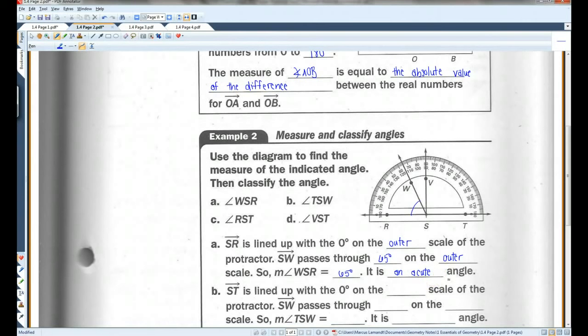Ray ST, we're looking at this one now. Angle TSW would be this angle here. ST is lined up with zero on the inner scale of the protractor. SW passes through, looks like about 115 on the inner scale. We call it the inner scale and outer scale because this scale is on the outside and this scale is on the inside. On the outer scale, it passes through 65, but because I'm using the inner scale for ST, I have to use the inner scale for SW also. So the measure of angle TSW is 115 degrees. And because it's between 90 and 180, it is an obtuse angle.